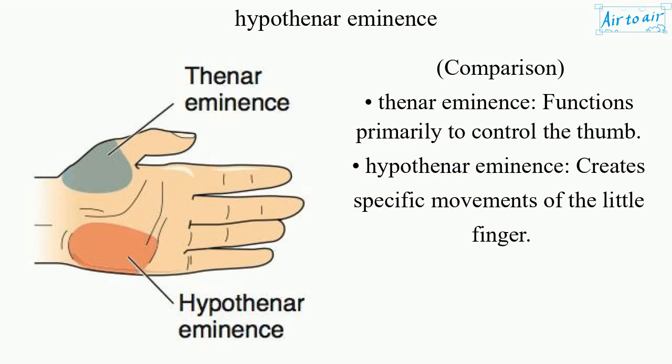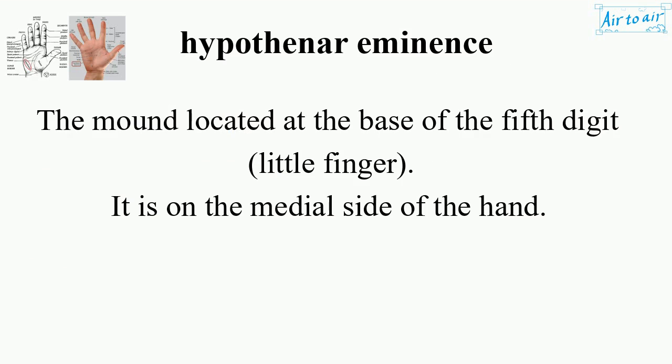Comparison: Thenar eminence functions primarily to control the thumb. Hypothenar eminence creates specific movements of the little finger.